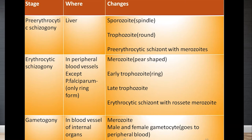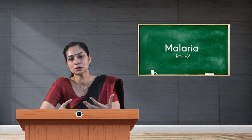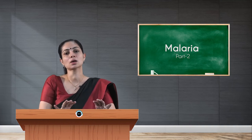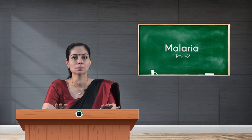The stage changes are: in pre-erythrocytic schizogony, spindle-shaped sporozoites enter the liver, become trophozoites, and later become merozoites inside the schizont. Merozoites then attack RBCs, becoming the ring stage, then late trophozoite, and finally the erythrocytic schizont with rosette of merozoites. Some merozoites will keep attacking RBCs while others will turn into male or female gametocytes. This is what happens in the human body after a mosquito bite containing the malaria parasite.